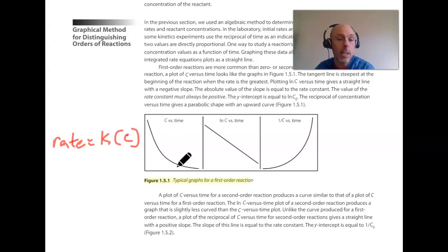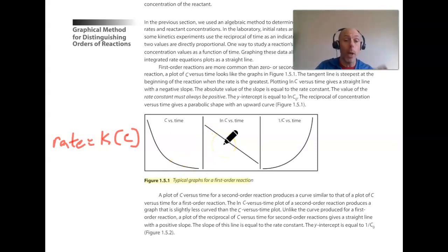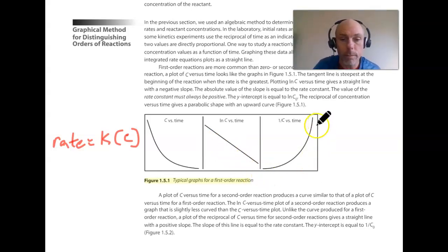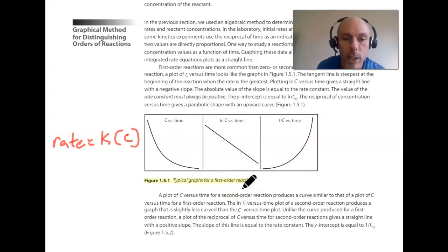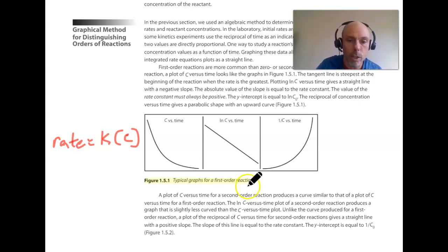There's a derivation in calculus that proves this, but the natural log of concentration versus time for a first order reaction will be linear, while the inverse of concentration versus time won't. What you want to hang on to is that a first order reaction will be linear for the natural log of concentration versus time. First order reactions have linear data sets of natural log of concentration versus time.